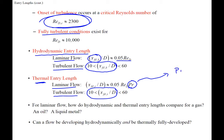Thermal entry length also has laminar and turbulent conditions. For turbulent, we still use 10. For laminar, it's similar to the hydrodynamic entry length but multiplied by the Prandtl number: 0.05 times Reynolds number times Prandtl number. If the Prandtl number is 1,000, the thermal entry length is much, much greater than the hydrodynamic one — the velocity entrance length is so short it's essentially negligible, because you're waiting 1,000 times more length for the thermal profile to even develop.